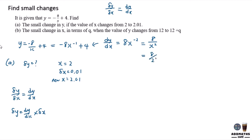Since x is 2, substitute with 2 squared: you get 8 over 4, which equals 2. So dy/dx is 2. Therefore, delta y equals 2 times delta x, which is 0.01, giving a final result of 0.02. So 0.02 is your delta y.